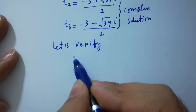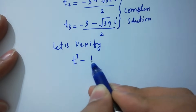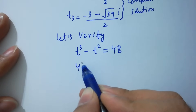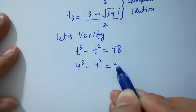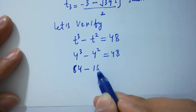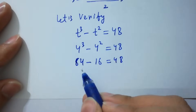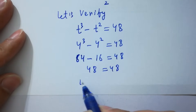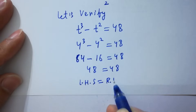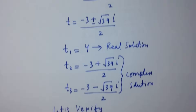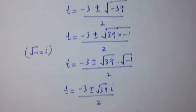Let's verify: t cubed minus t squared equals 48. With t equals 4: 4 cubed minus 4 squared equals 48. 4 cubed is 64, minus 4 squared which is 16, equals 48. So 64 minus 16 is 48, equals 48. Left hand side equals right hand side.